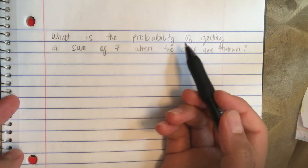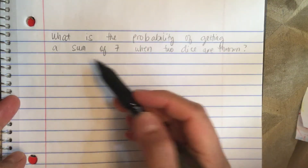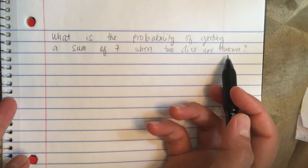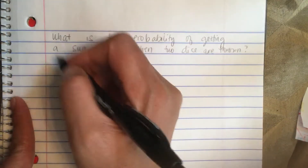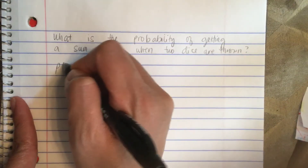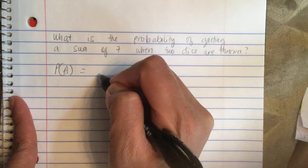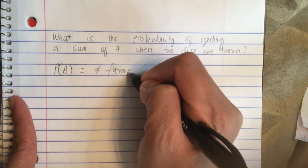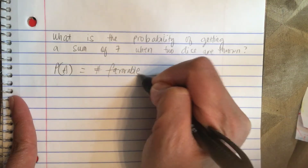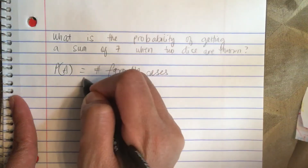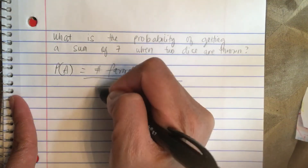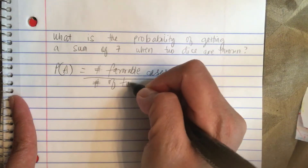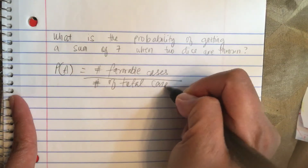What is the probability of getting a sum of 7 when two dice are thrown? The probability of any event A is equal to the number of favorable cases over the number of total cases.